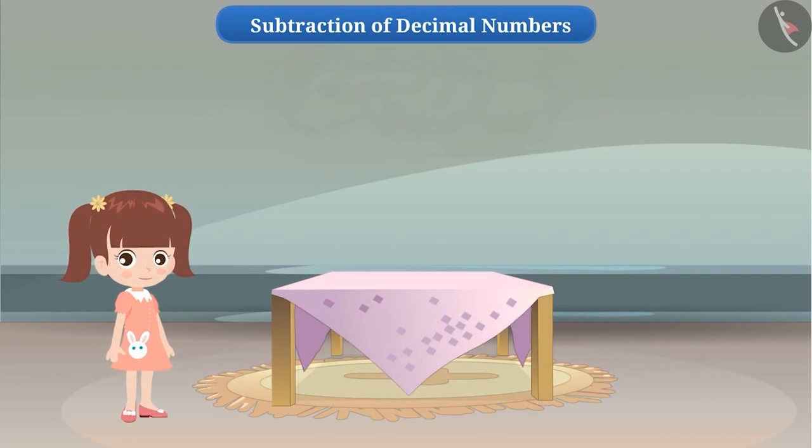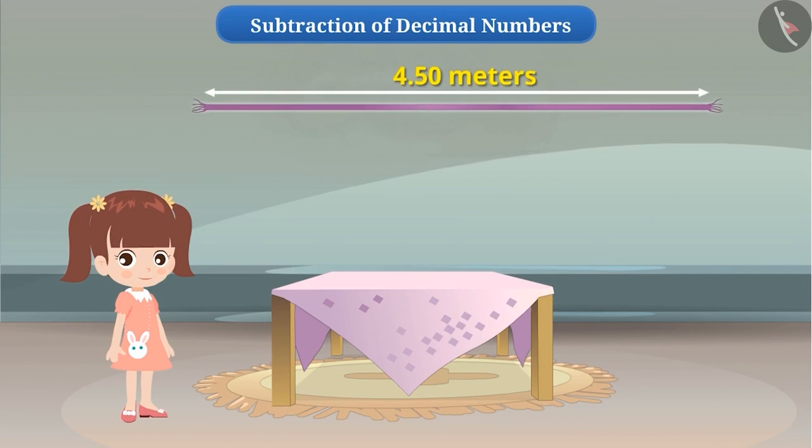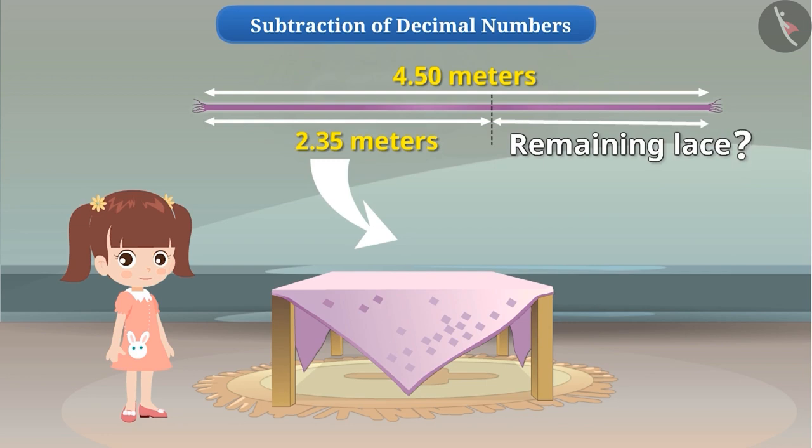Shelly wants to cover four sides of the table cloth with a lace. Shelly has 4.5 meters length of lace. She used 2.35 meters of lace to cover the table cloth. What is the length of the remaining lace with her?